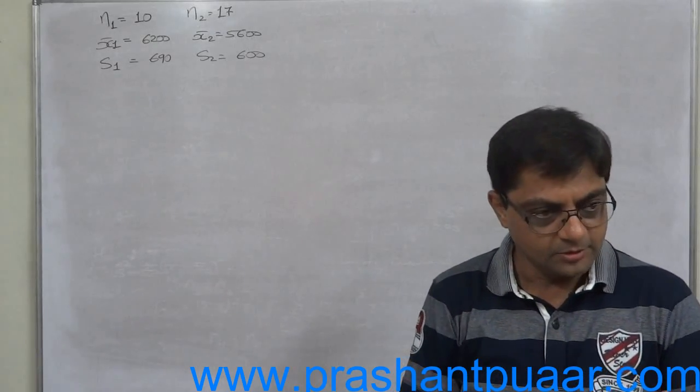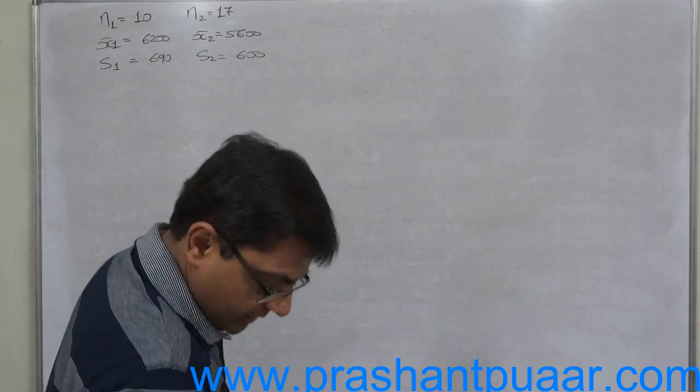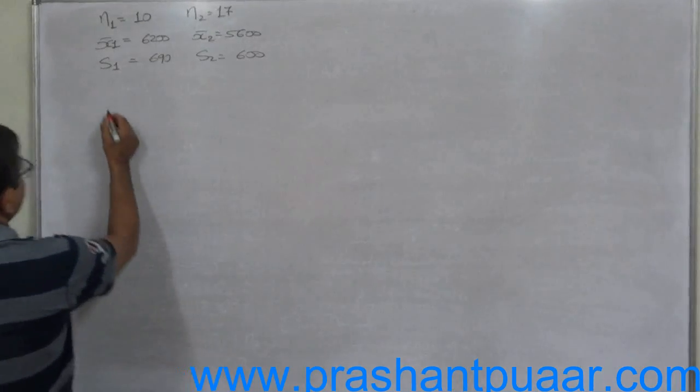In null hypothesis we always say there is no significant difference between the two average sizes of sales. That's why it is one-tailed test. But before that we have to calculate the S cap square.